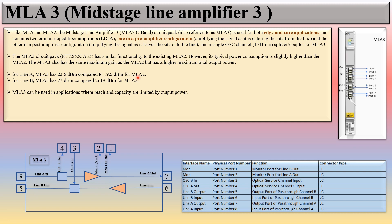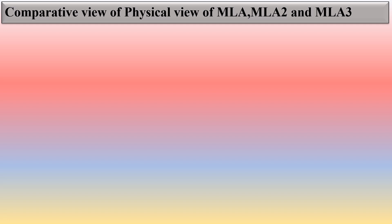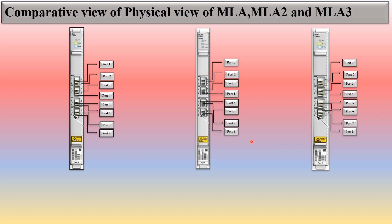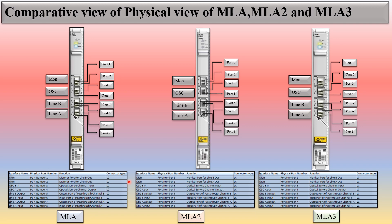MLA3 can be used in applications where reach and capacity are limited by output power. In some cases MLA3 can help avoid Raman use, and in some cases it can remove the need for regeneration. MLA3 enables fully filling C-band with 100G wavelengths and in some network scenarios can provide margin improvement. All three amplifiers have eight ports, the same dimensions, same port pairs — monitor, OSC, Line B, Line A — same physical presentation and same interface names, port functions, and connector types.